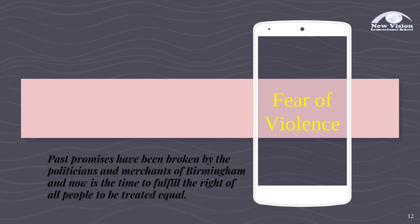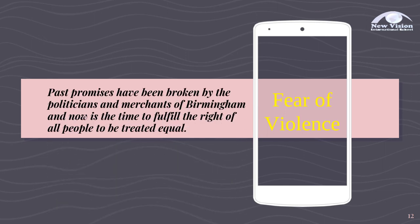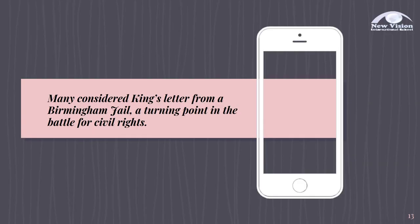He also stresses fear of violence. He ended his letter by saying past promises have been broken by the politicians and merchants of Birmingham, and now is the time to fulfill the right of all people to be treated equal. Because of taking a courageous action, many considered King's letter from a Birmingham Jail a turning point in the battle for civil rights.